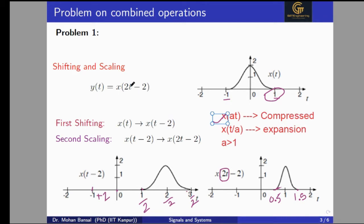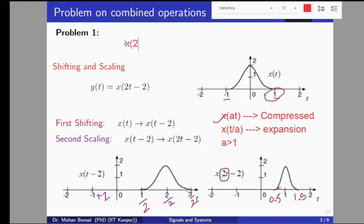If t is negative, then we will apply the time reversal. One important thing: if we have a signal like x(2t - 1), please remember we should not shift by one directly. First we need to rewrite the signal as x(2(t - 0.5)), or equivalently express x(2t - 1) by factoring correctly. Do not treat it as x(at - b) directly without factoring out a first.